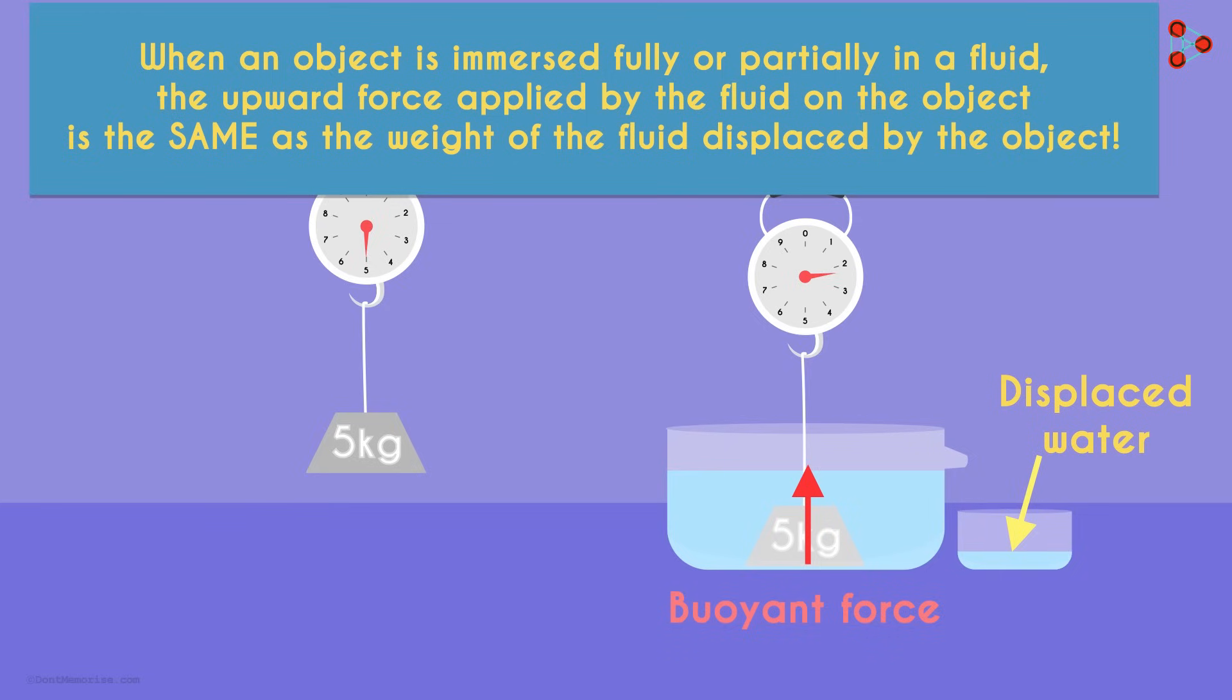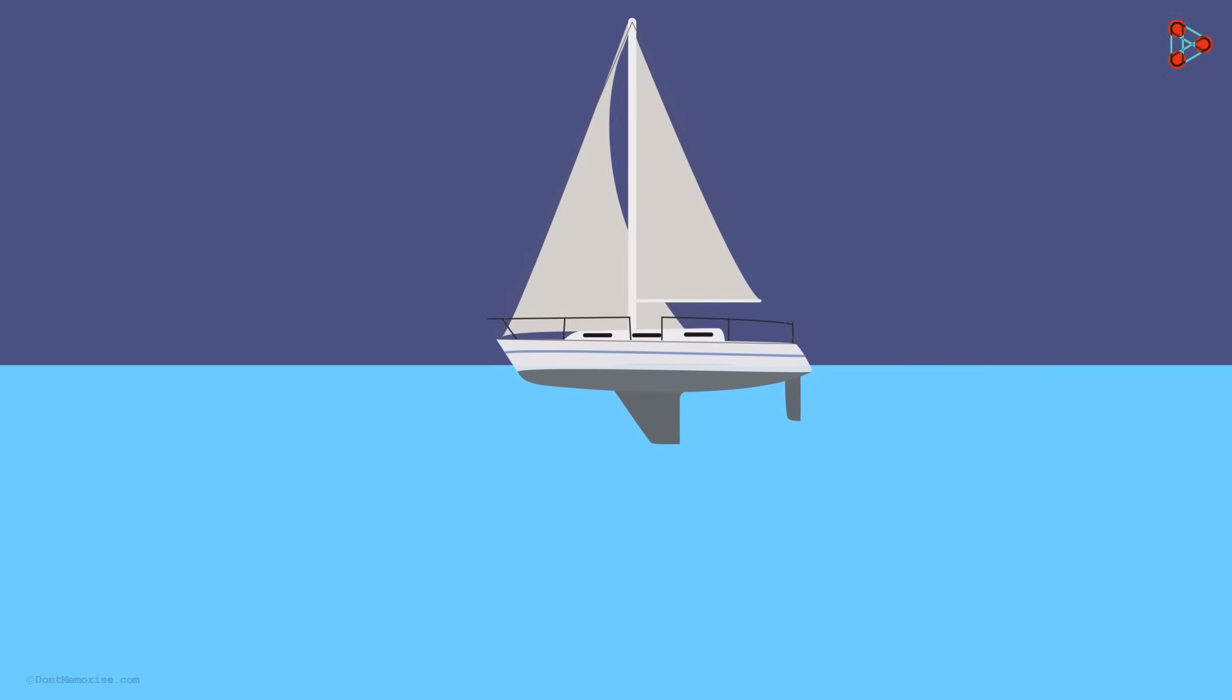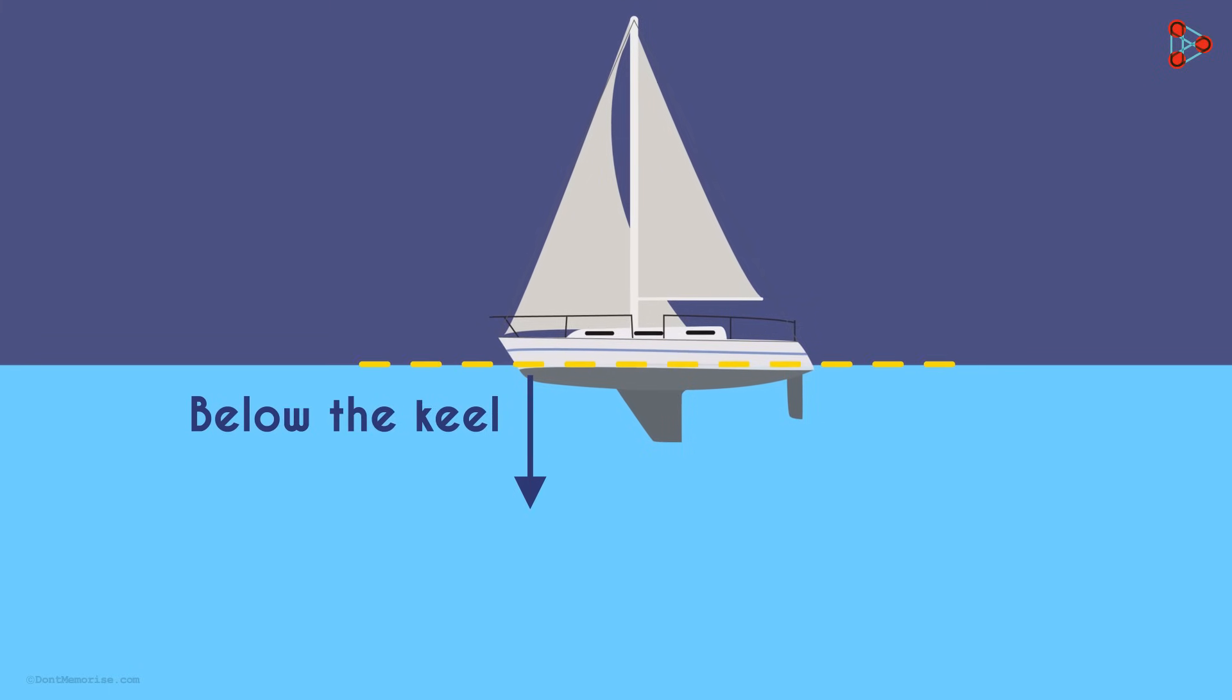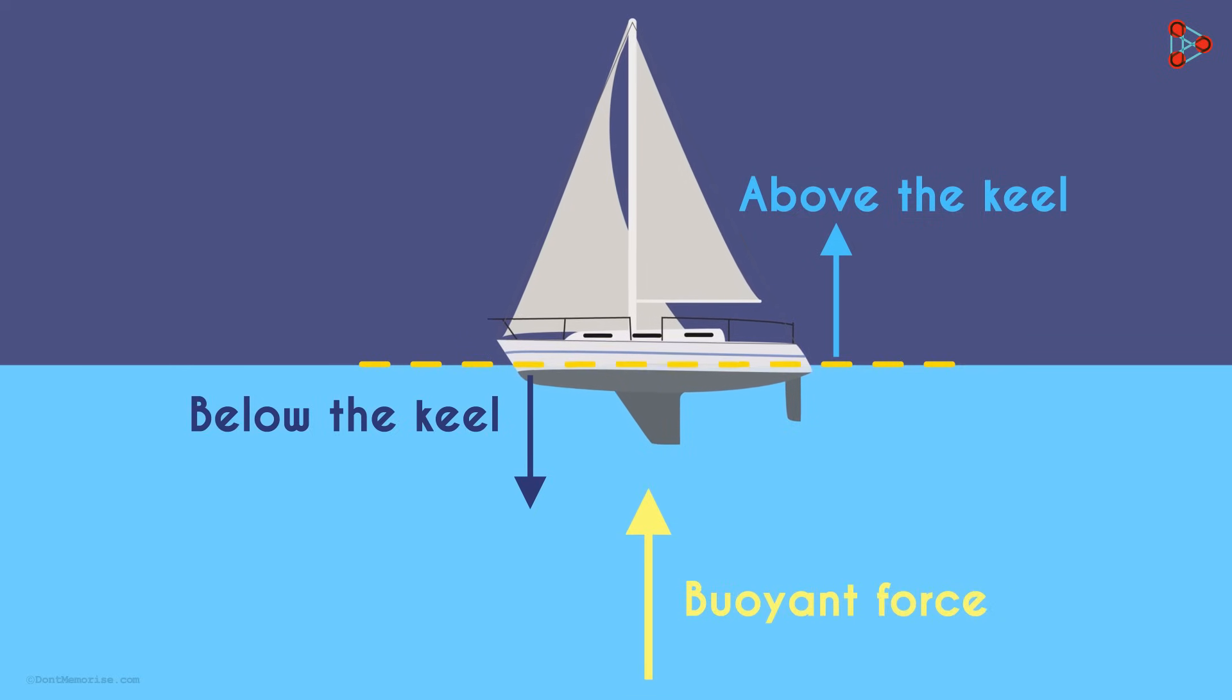Where is this principle applied? Can you think of examples? How do you think large steel ships float? It's simple. If the weight of water displaced by the vessel below the keel is equivalent to the vessel's weight, then everything above the keel will remain afloat. That's because the water too applies an upward buoyant force on the ship, which is same as the weight of the water displaced by it.